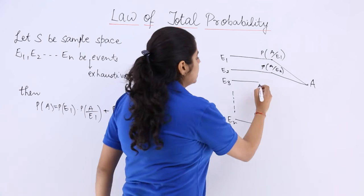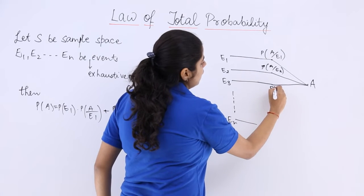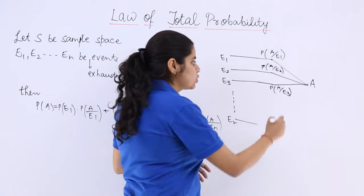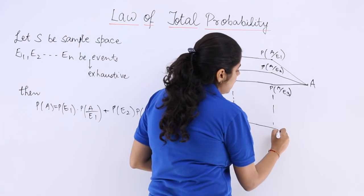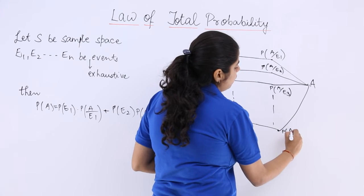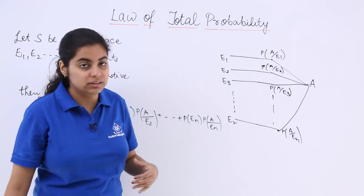And similarly from here, when E3 has occurred, and so on up till the case where we reach probability of A when EN has occurred.